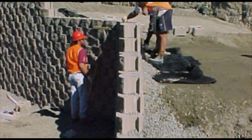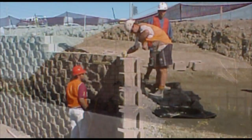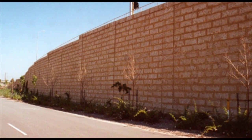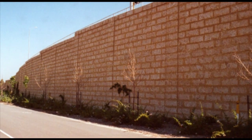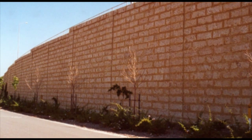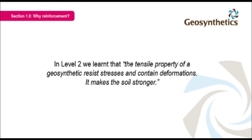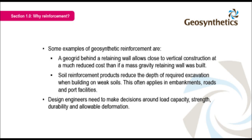Geosynthetic reinforcement is also used in modern retaining walls. This is another example of a geosynthetic being used to strengthen soil in civil constructions — a very high vertical wall — bound to the soil behind by a geogrid. We learnt that the tensile property of a geosynthetic resists stresses and contains deformations, making the soil stronger. A geogrid behind a retaining wall allows close to vertical construction at a much reduced cost than a mass-gravity retaining wall. Design engineers need to make decisions around load capacity, strength, durability, and allowable deformation.